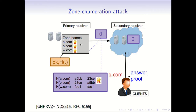Along with it, it also has to prove non-membership on the fly. To facilitate that, the primary resolver hashes every domain name, lexicographically sorts the hashes, and then signs every pairwise hash in the sorted list. This facilitates the proofs of non-membership. When a client query comes, if the element is in the database, the secondary resolver will only return its signature and it's done.